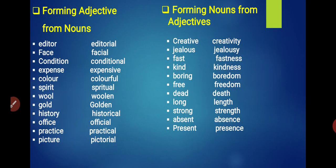Next, we will form adjectives from nouns and nouns from adjectives. The first word is Editor, which becomes Editorial. Face becomes Facial. Condition becomes Conditional. Expense becomes Expensive. Color becomes Colorful. Spirit becomes Spiritual. Wool becomes Woolen. Gold becomes Golden. History becomes Historical. Office becomes Official. Practice becomes Practical. Picture becomes Pictorial.